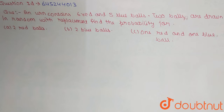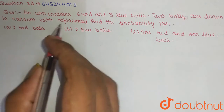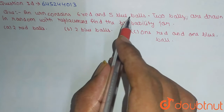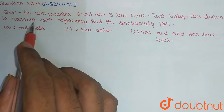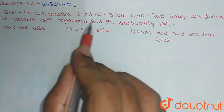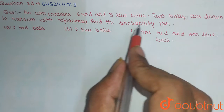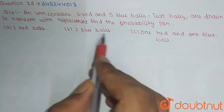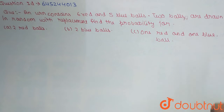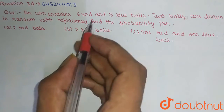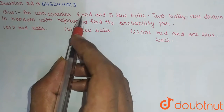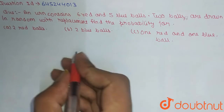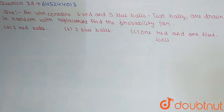Hello friends. Our question is on probability. The question says that an urn contains six red balls and five blue balls. Two balls are drawn at random with replacement. Find the probability for: (a) two red balls, (b) two blue balls, (c) one red and one blue ball.